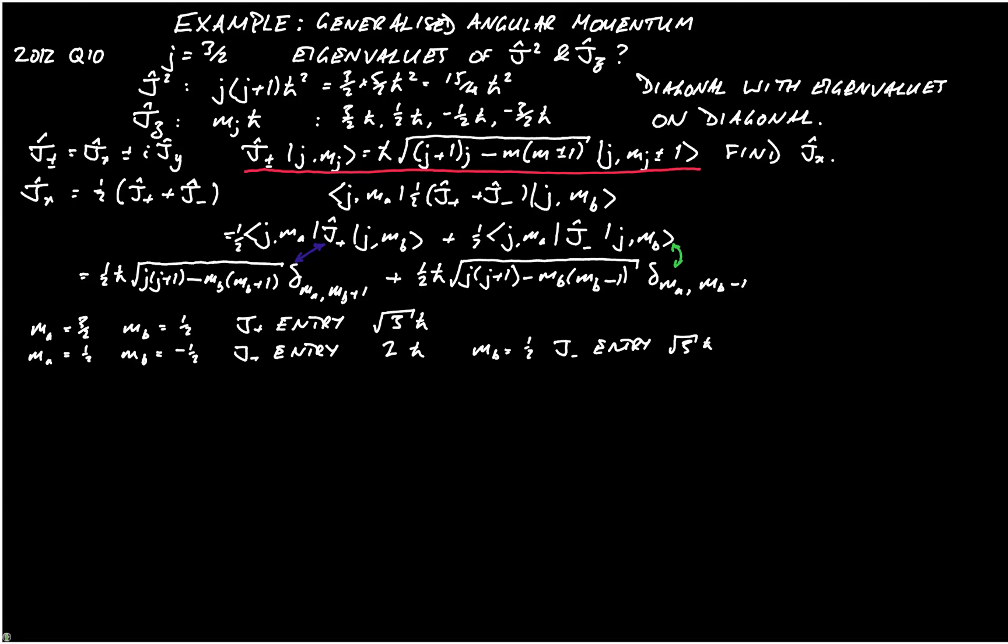And eventually we find, I'm going to do this on the right-hand side, that jx is given by the matrix. We have an h bar over 2 out of the front. And then we're going to have 0, root 3, 0, 0.